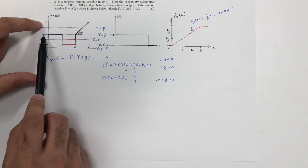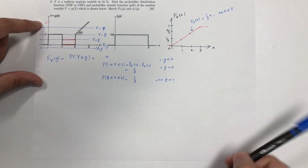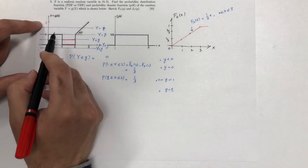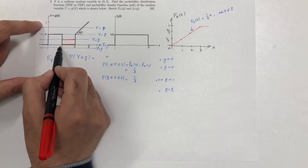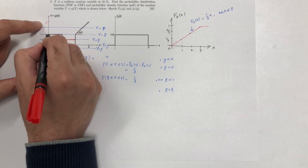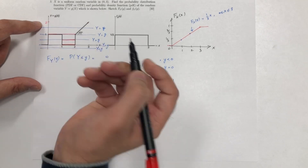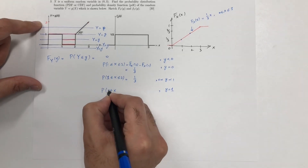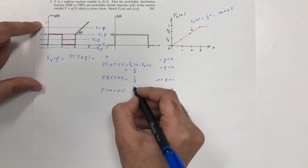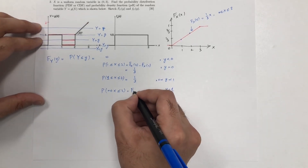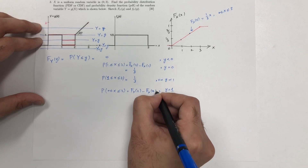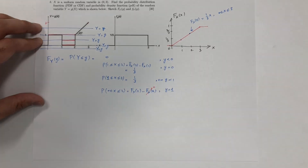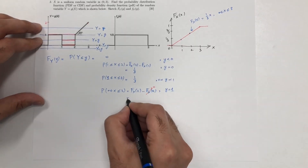When y is exactly 1, the black solid line is below it across the entire region from x equals 0 to x equals 2. So it is the probability that x is between 0 and 2, which is F_x(2) minus F_x(0). Since F_x(0) = 0 and F_x(2) = 2/3, the result is 2/3.